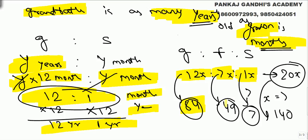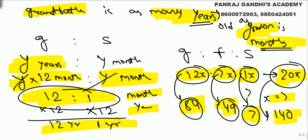To recap: the ratio of their present ages is 12:7:1. If grandson is 1, father is 7, grandfather is 12. Summation is 20x, and the actual summation given is 140, so we get x = 7 and solve for all three ages.